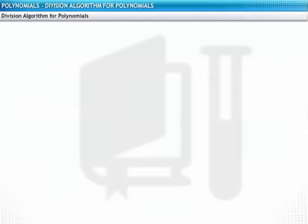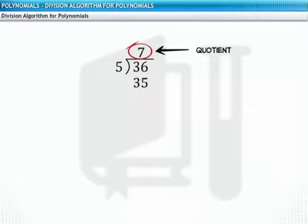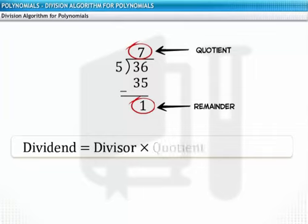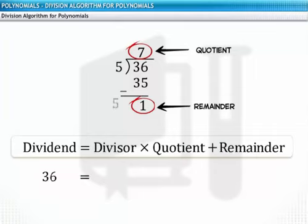Let's perform a simple division of 36 by 5. Notice that the quotient is 7 and the remainder is 1. We can recall Euclid's division algorithm here: the dividend is equal to the divisor into the quotient plus the remainder. In this case, 36 is equal to 5 into 7 plus 1.